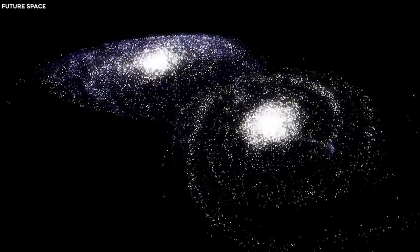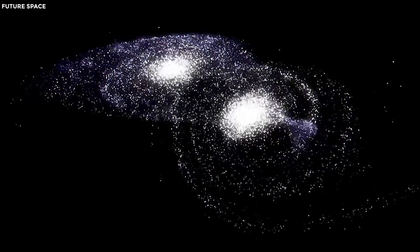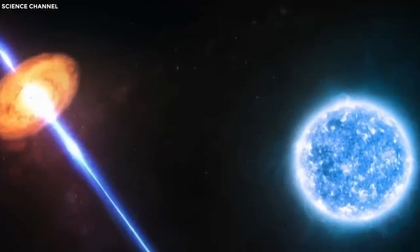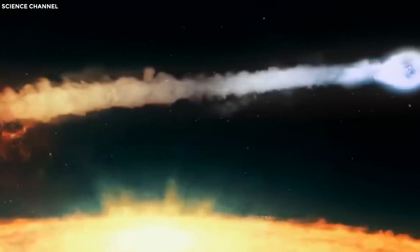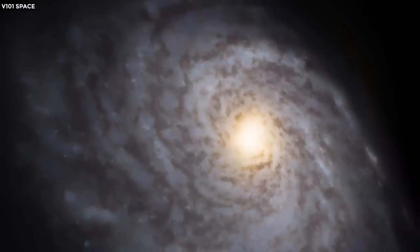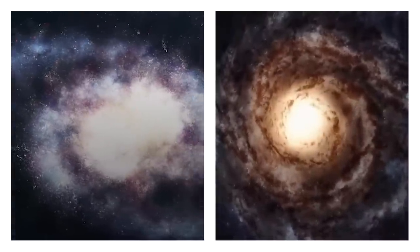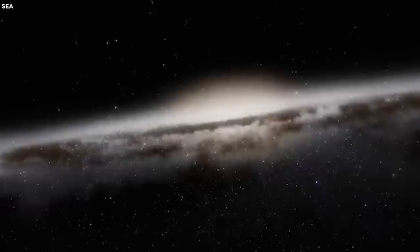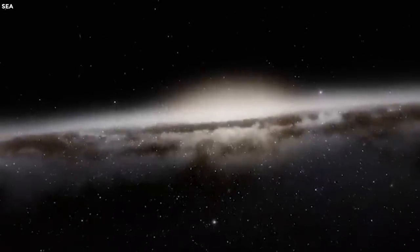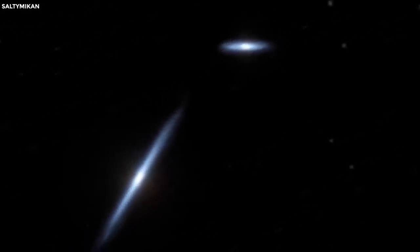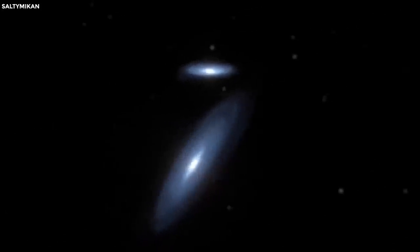By the time the Milky Way and Andromeda galaxies collide, the sun will have transformed into a white dwarf, far from its original state. This compact and dense white dwarf will continue to exist within the newly merged galaxy formed from the Milky Way and Andromeda. It will be a unique and unrecognizable object, residing within the intricate structure created by the merging of these two galaxies.